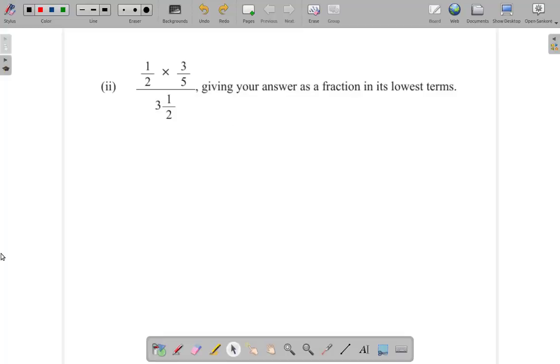Let's look at part 2 of question 1a. It says half times three-fifths divided by three and a half. Now, let's concentrate on what is up here first.